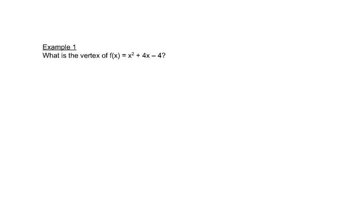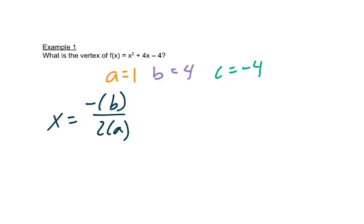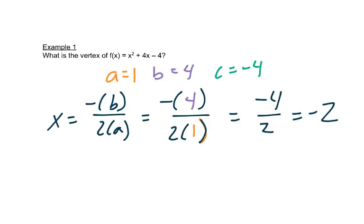So let's practice this. We want to find the vertex. This is already in standard form. It tells us a is 1, b is 4, and c is negative 4. So our formula says we use x equals the opposite of b over 2 times a. So we'll have 4 in place of b, and 1 in place of a. And it gives us negative 4 over 2, which is negative 2. So this is our x part.